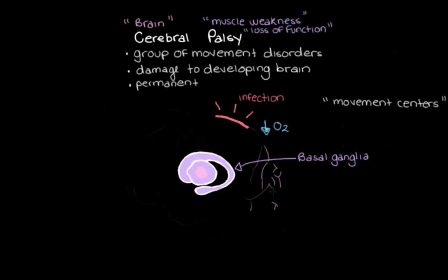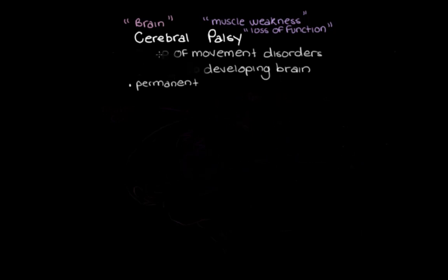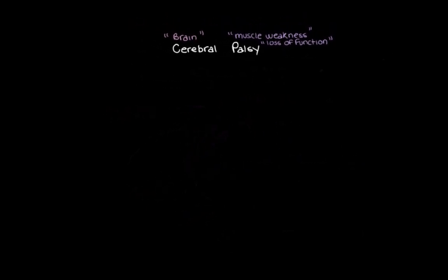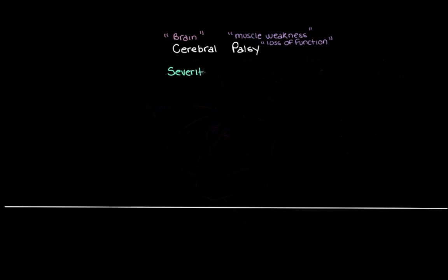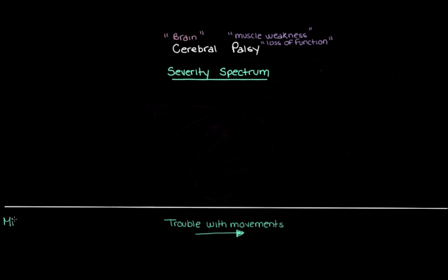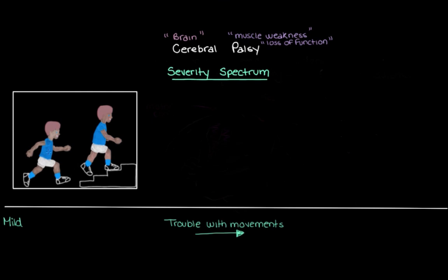One of the interesting issues with cerebral palsy is that the amount of trouble each person has with their movements can vary a lot between different people. Let's draw a severity spectrum for cerebral palsy — the further to the right, the more trouble the person has with their movements. On the mild end, we have people who aren't too badly affected from a functional day-to-day point of view. This little boy, for example, looks like he's able to walk and run around pretty well, so we would say he's not too severely affected — his form of cerebral palsy is quite mild.